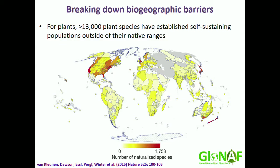For example, we've shown in a recent study for plants that there are more than 13,000 plant species that have established self-sustaining populations outside of their native ranges. As this map shows, you can see particular hotspots in the UK and along the seaboards of North America, and also Hawaii.